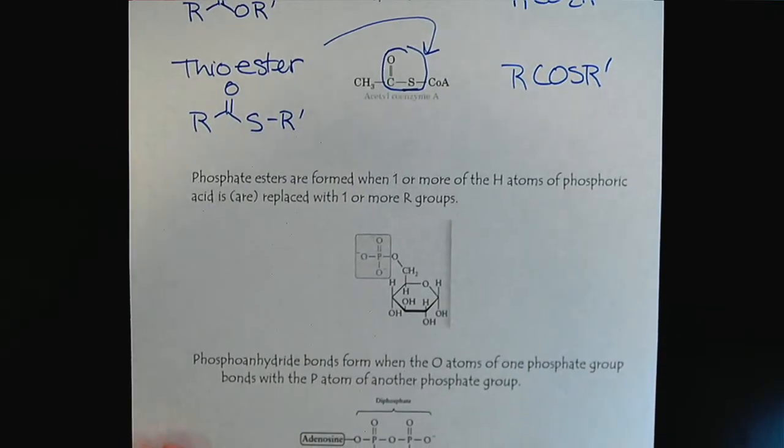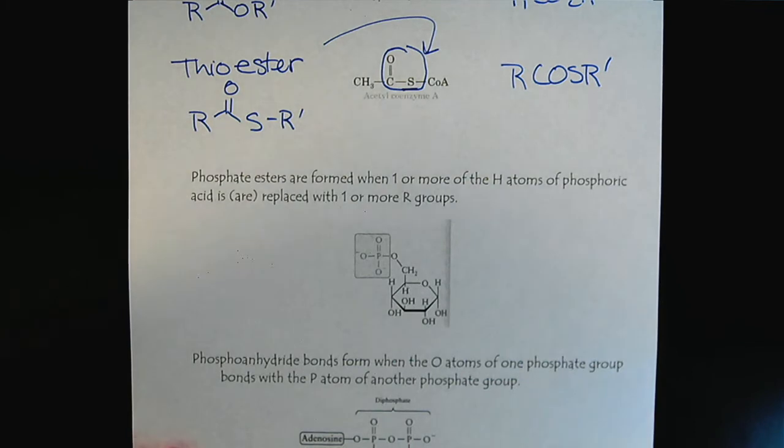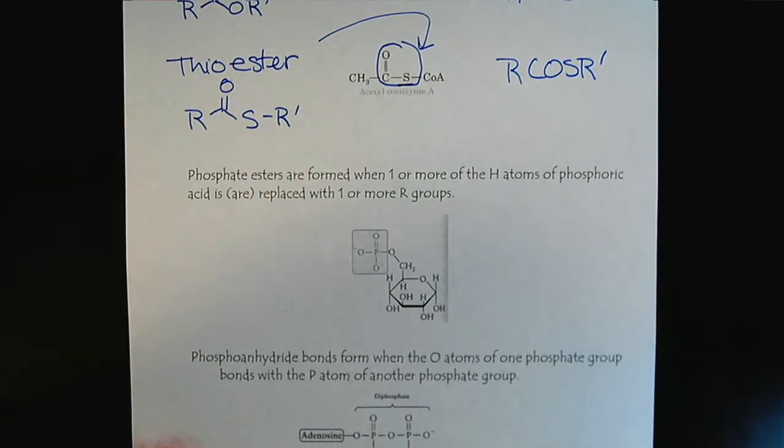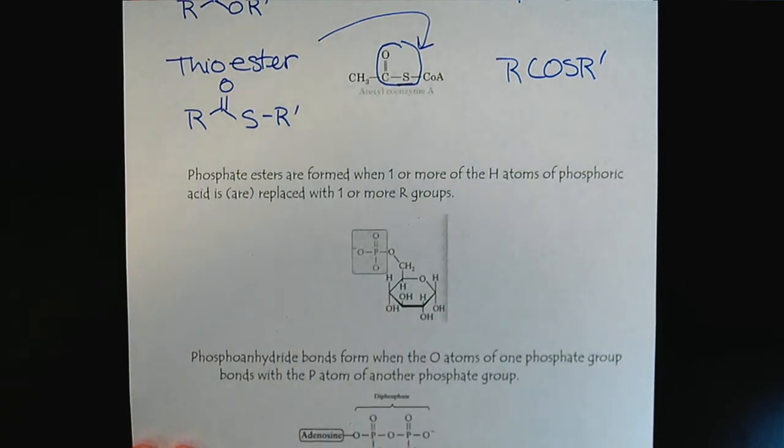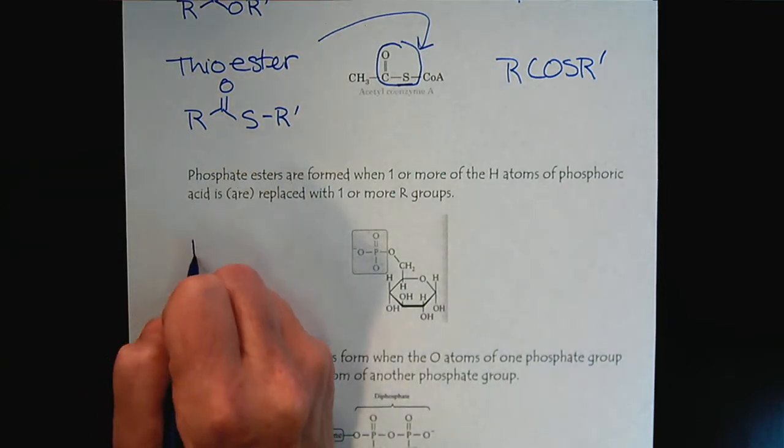Now, phosphate esters are a little more complicated because phosphorus is a third period element. And so it's allowed to have an expanded octet. Notice that phosphorus is not limited by the octet rule.